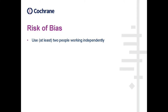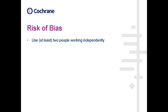Risk of bias. This is a very tricky one. Two people should be working independently when doing the risk of bias assessments. It's not enough for one person to do the risk of bias assessment and another person to look at what they've done and say yes, that's fine. Ideally, the two people should go away and do it separately, then come back and compare the results, see any areas where they disagreed, and discuss why one thought high-risk when the other thought low-risk.